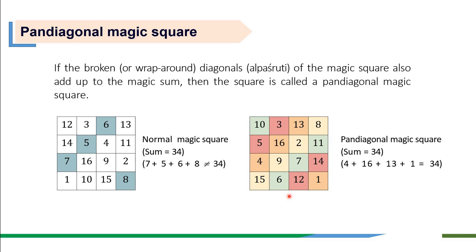Now if we see the left magic square, it is a magic square because the total of the 4 numbers - 12+3+6+13, or any of the columns 12, 14, 7, 1, or even the diagonal 13, 4, 16, 1 - all add up to 34. So it is a normal magic square.